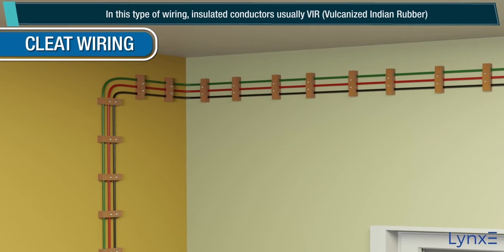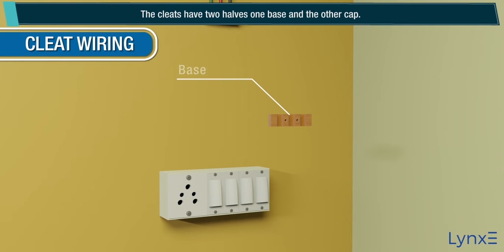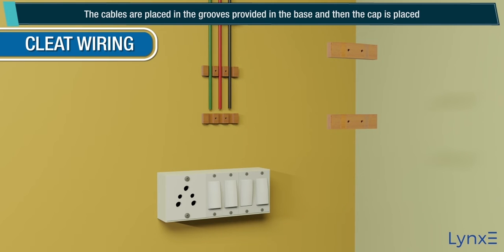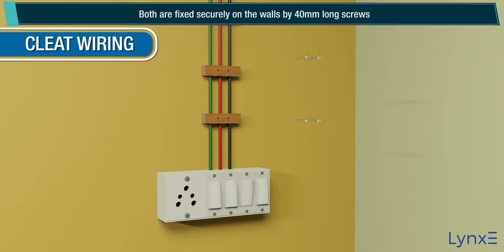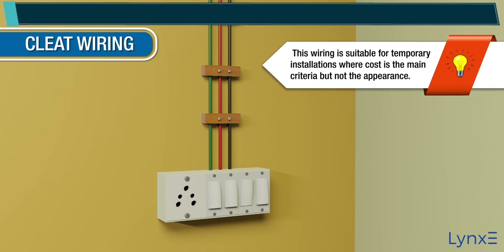Cleat Wiring: In this type of wiring, insulated conductors, usually VIR (vulcanized Indian rubber), are supported on porcelain or wooden cleats. The cleats have two halves — one base and one cap. The cables are placed in the grooves provided in the base, and then the cap is placed. Both are fixed securely on the walls by 40mm long screws. The cleats are easy to erect and are fixed 4.5 to 15 centimeters apart. Note: This wiring is suitable for temporary installations where cost is the main criteria but not appearance.